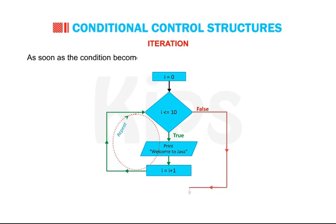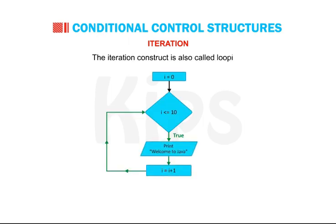As soon as the condition becomes false, the control comes out of the loop and the repetition stops. The iteration construct is also called looping.